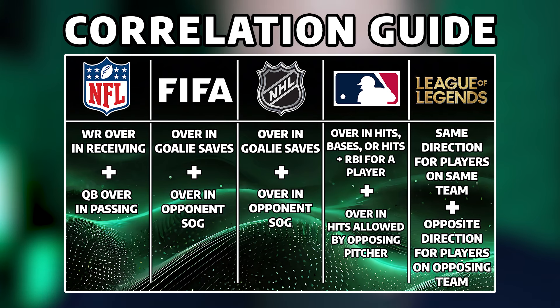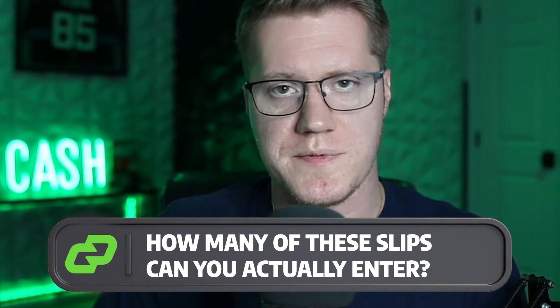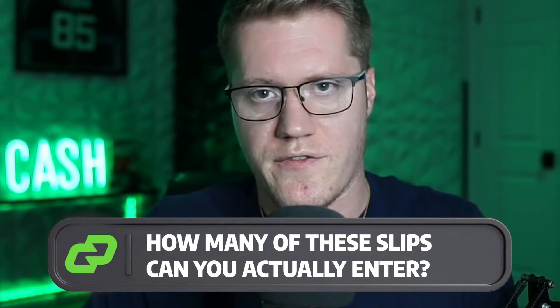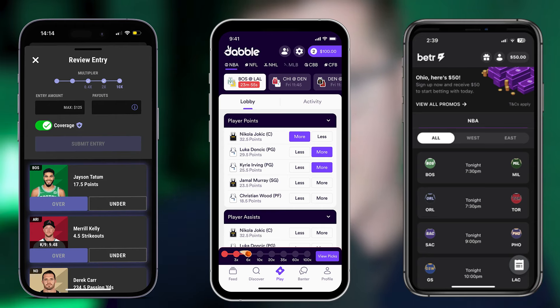The next question is how many profitable slips are you able to enter, and how can you take advantage of the lack of correlation rules across various DFS platforms? Some fantasy platforms like PrizePix and Underdog are more strict with their correlation rules than smaller DFS apps like Boom Fantasy, Dabble, or Better. The main takeaway is that each fantasy app offers different correlation rule restrictions. It's up to you to find out those restrictions and find what edge you're able to exploit depending on the leagues offered, player props, and the specific DFS platform.